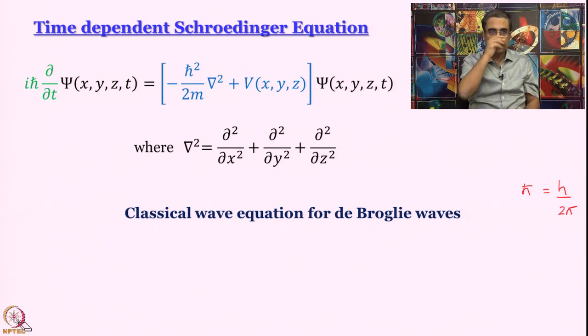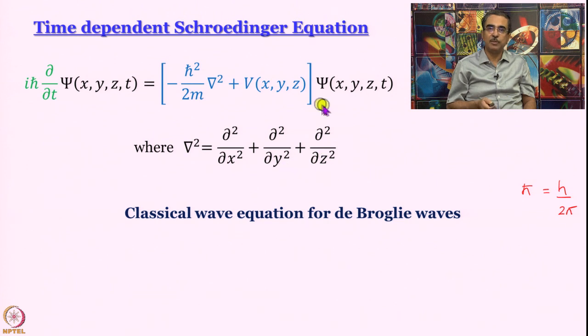Psi here is amplitude, maximum displacement from mean position. And psi is dependent not only on spatial coordinates, say x, y, z, but also on time. So Schrodinger equation turned out to be like this. iℏ, what is ℏ? ℏ is equal to h by 2π. ℏ is fundamental quantity in quantum mechanics as you are going to see. ℏ is simply h divided by 2π. It is a little shorthand notation to write h by 2π that is all. So this is what ℏ is. So iℏ ∂ψ/∂t is equal to minus ℏ²/2m ∇² plus V, V is potential energy operating on ψ.